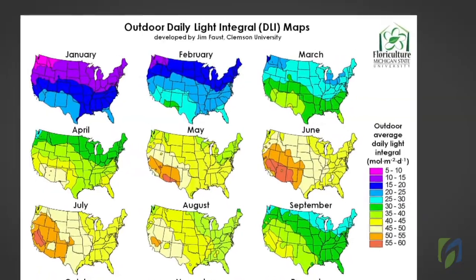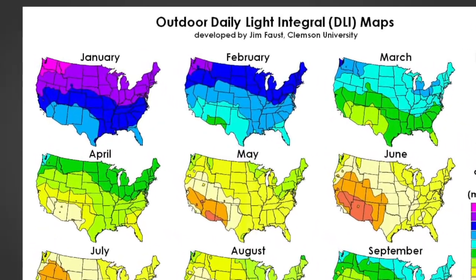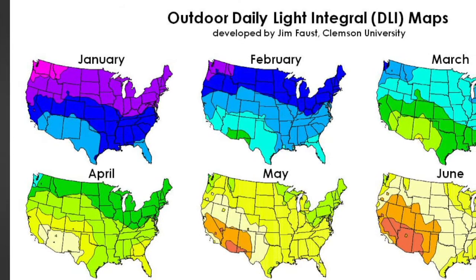Measurement of DLI can be particularly useful for growers in northern latitudes who are producing crops during the months of December through March.